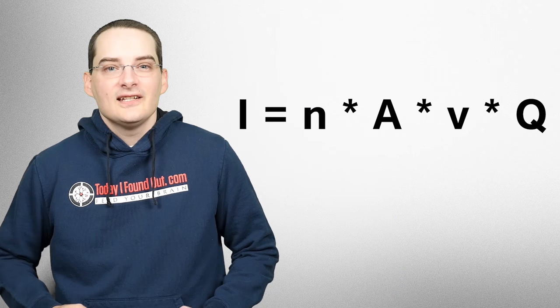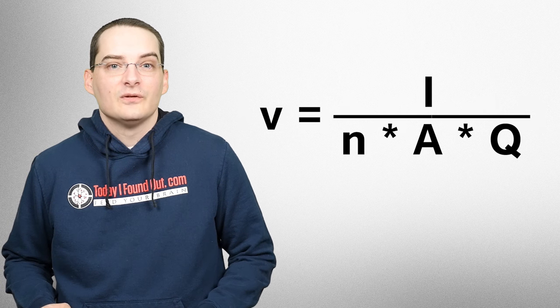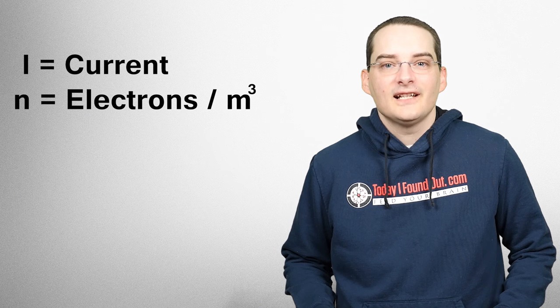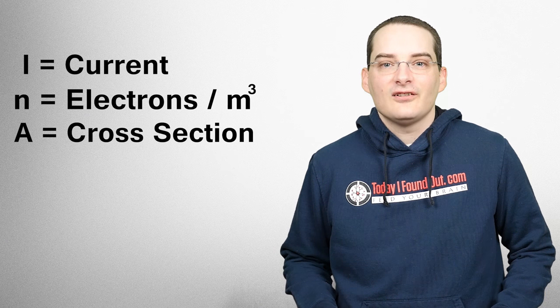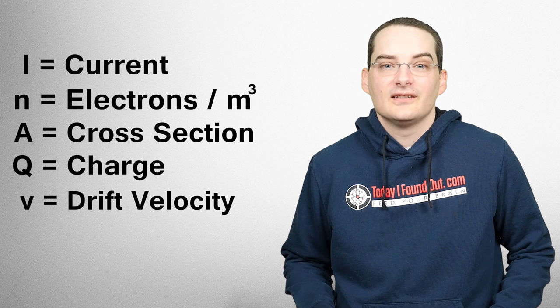How slow exactly? To calculate it, we use the formula I equals NAVQ, or V equals I over NAQ. I is the current, N is the number of electrons per cubic meter, A is the cross section of the wire, Q is the charge of an electron, and V is the drift velocity of the electrons.